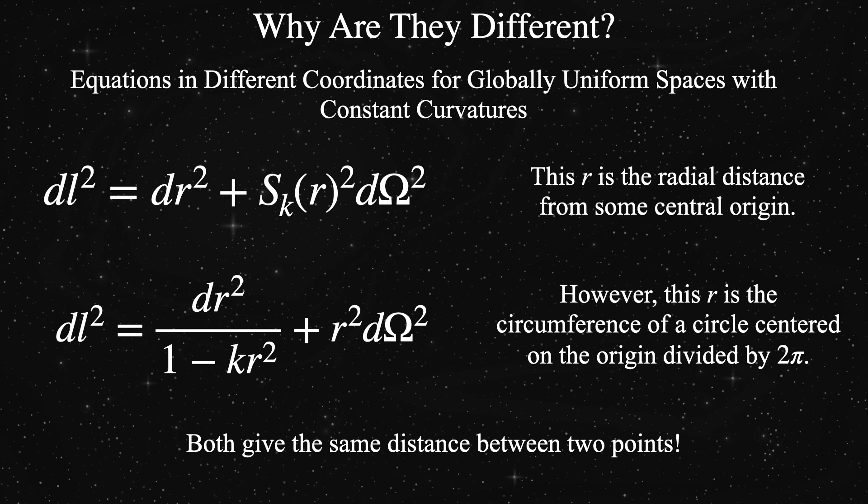In the hyperspherical coordinate system, little r is what you would normally think of as a radial coordinate. It's the distance from the origin to the point in question. In the reduced circumference polar coordinates, the little r is the length corresponding to the circumference of a circle centered on the origin divided by 2 pi. These two definitions of little r are not the same. They can't be used interchangeably. But the dl squared that they give rise to is exactly the same.